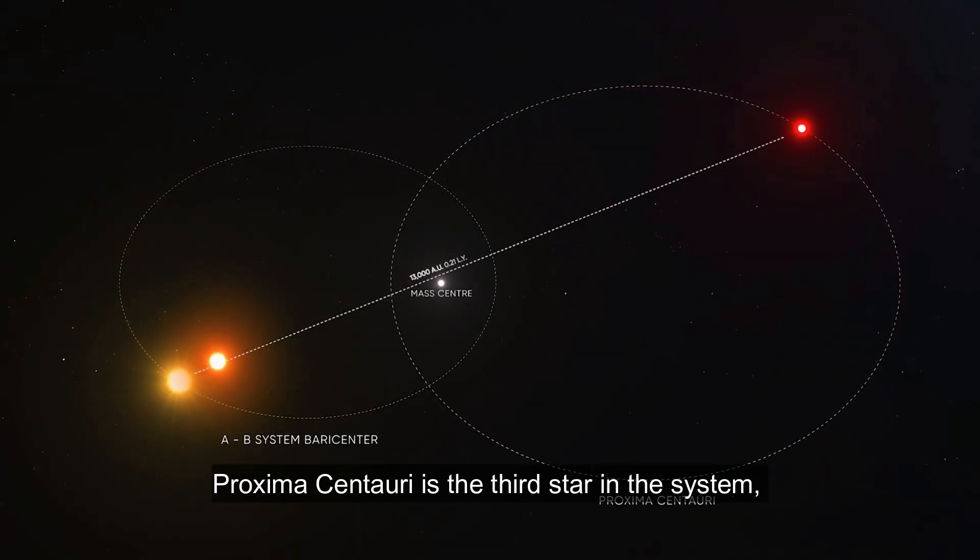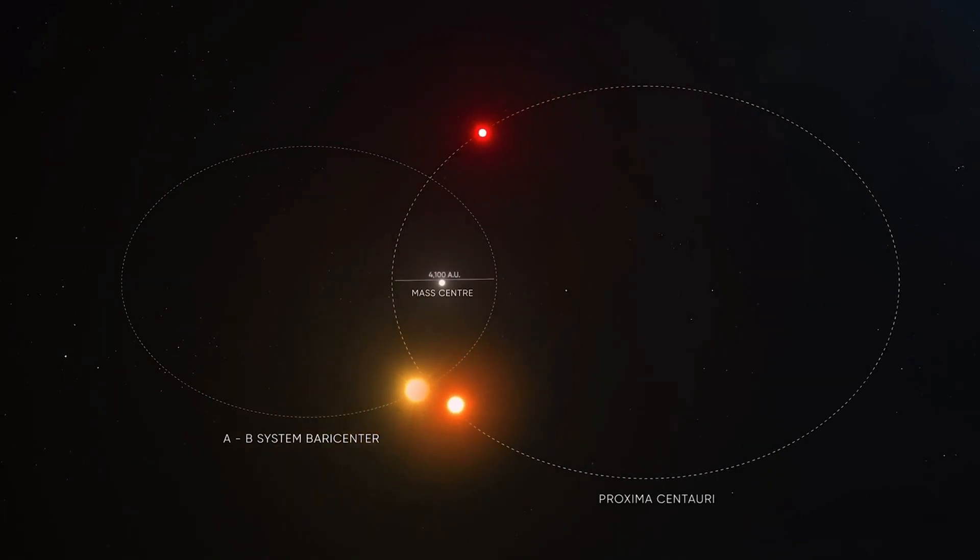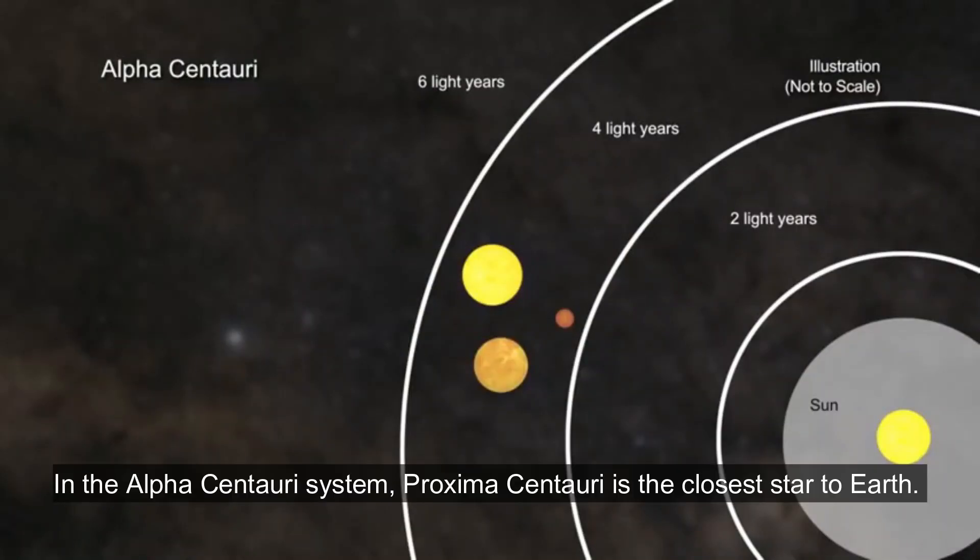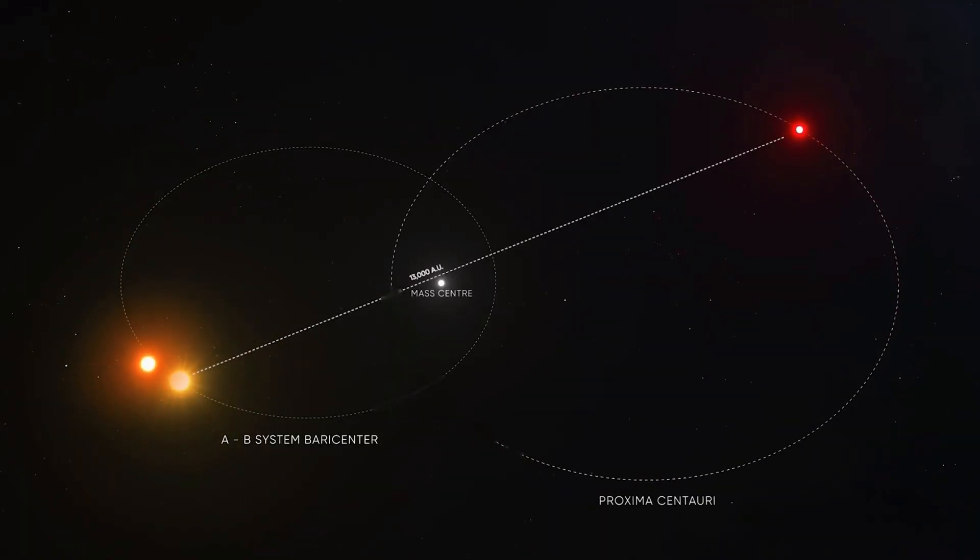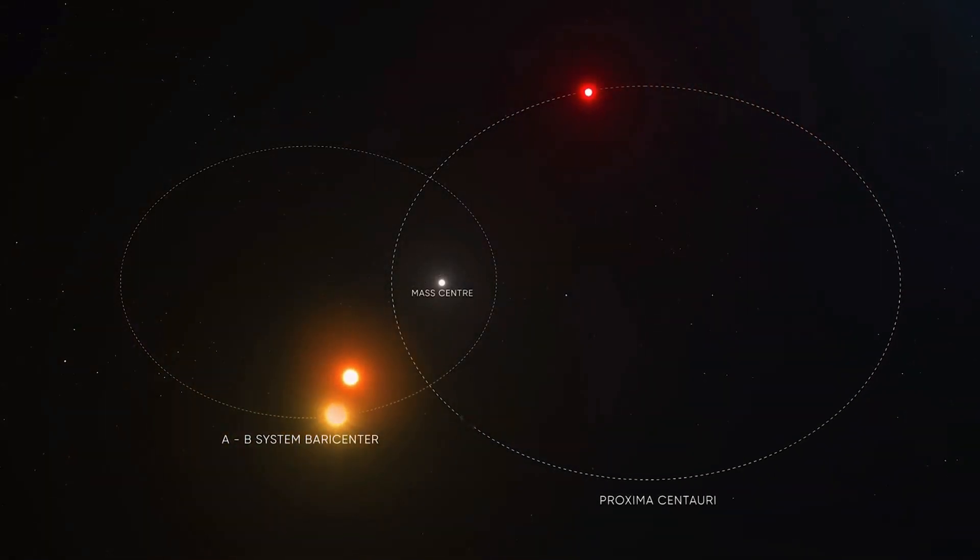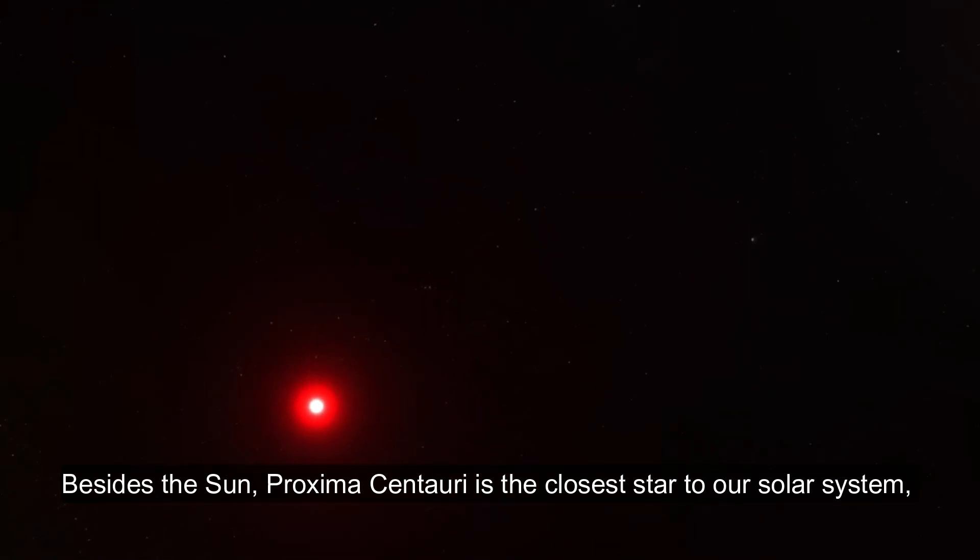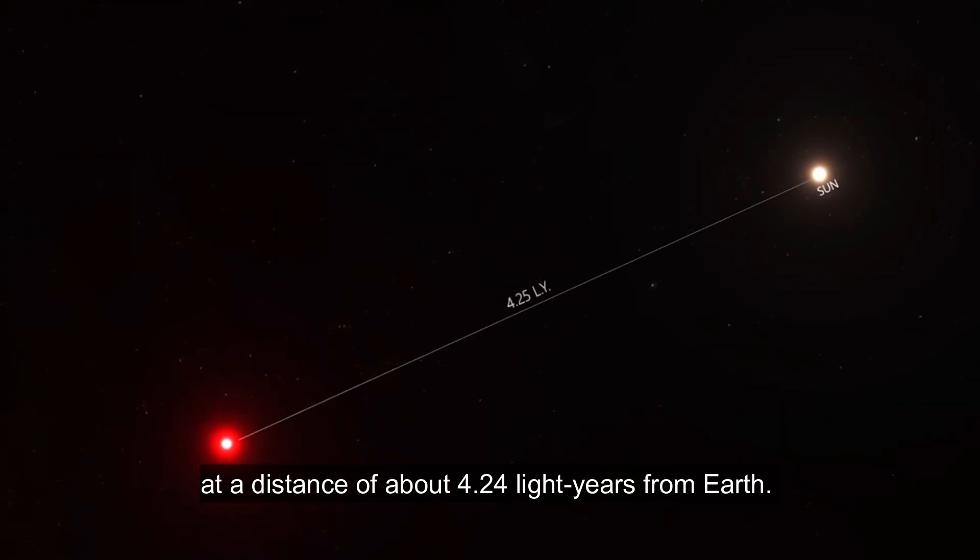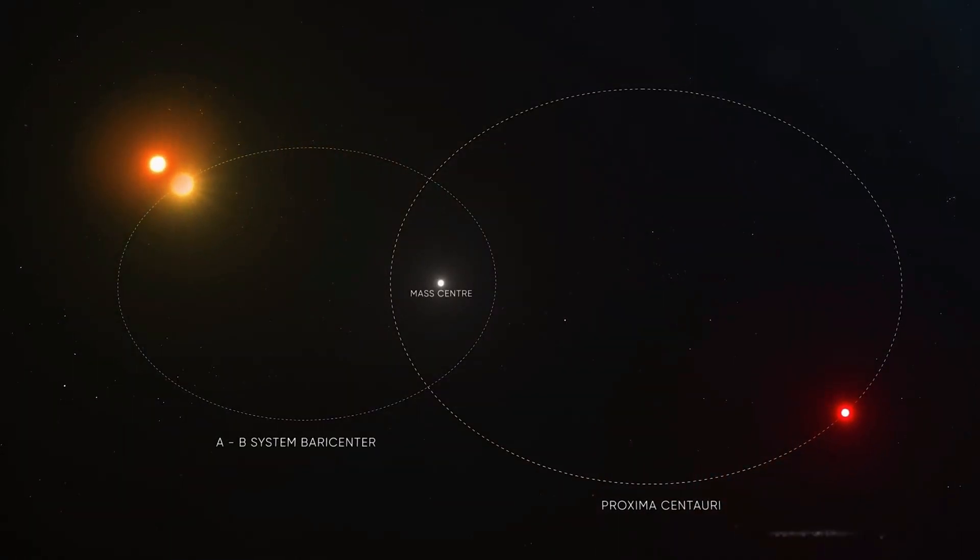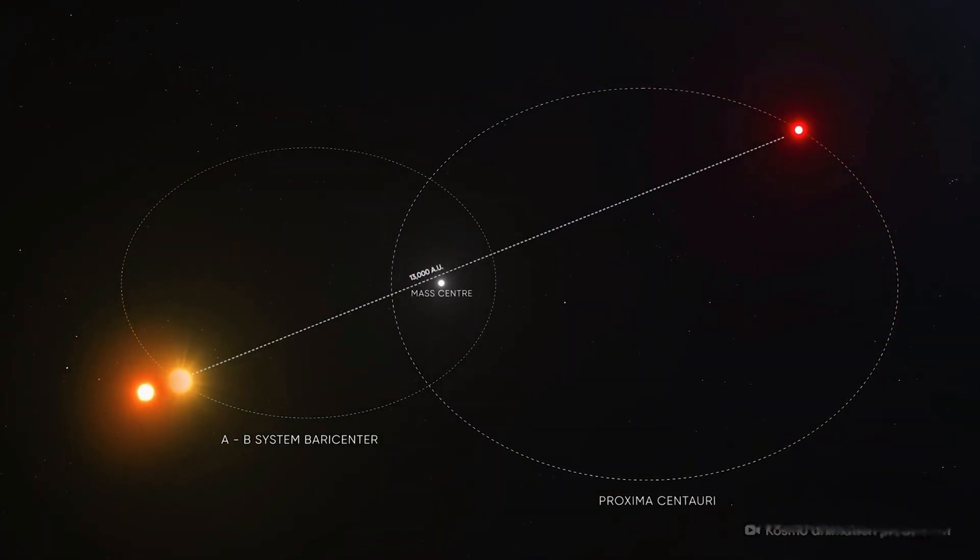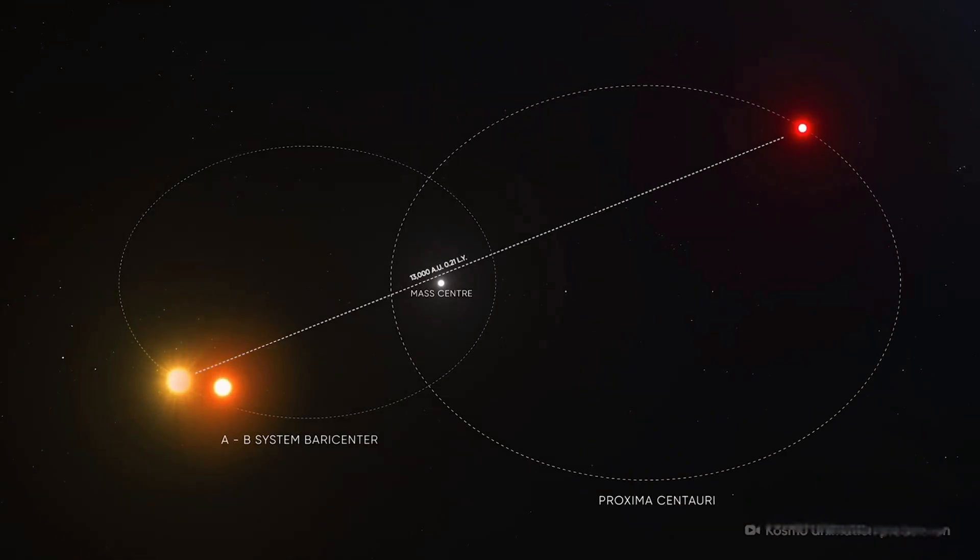Proxima Centauri is the third star in the system, farther than Alpha Centauri A and B. It is the star in the system that is closest to Earth, although it is farther away. In the Alpha Centauri system, Proxima Centauri is the closest star to Earth. However, it does not orbit directly around Alpha Centauri A or B. On the contrary, it is far below these two main stars.